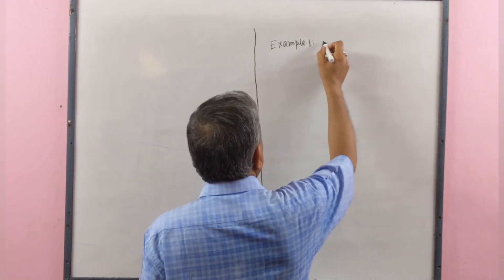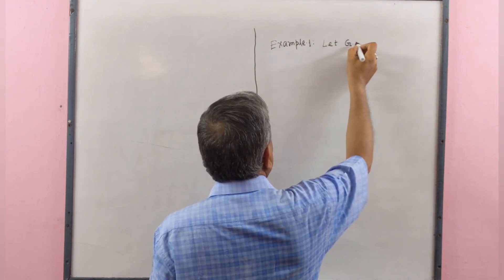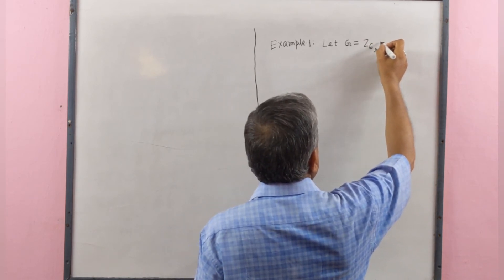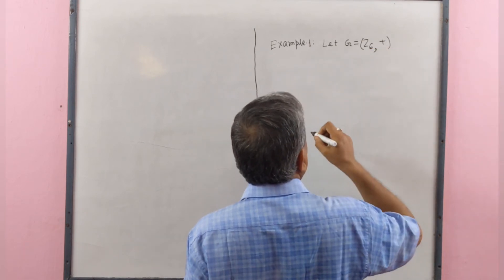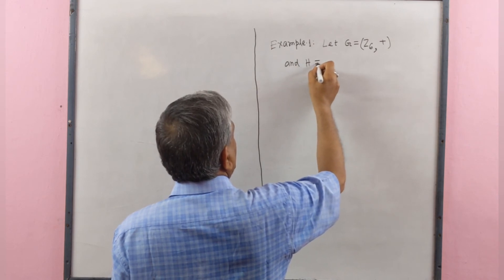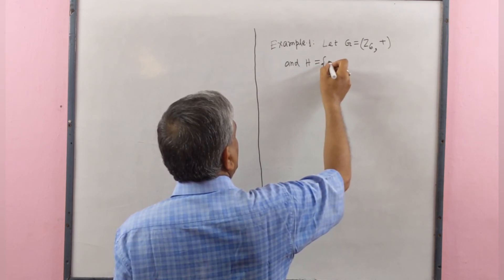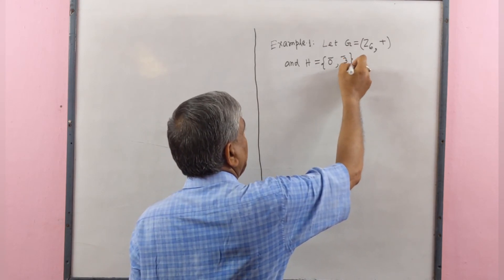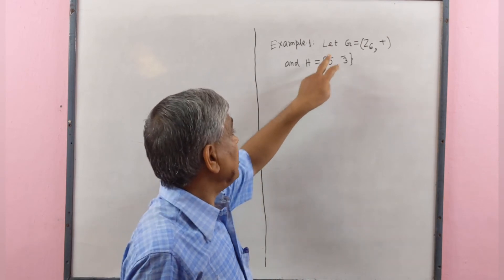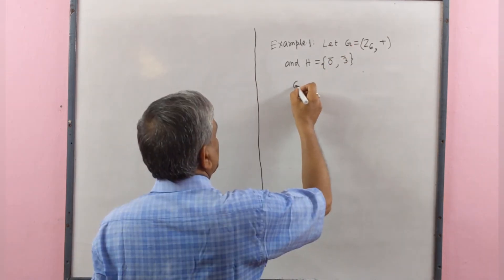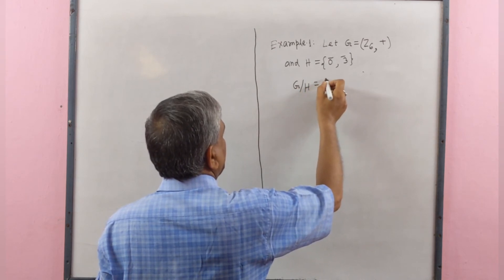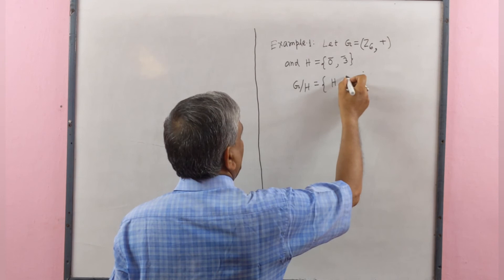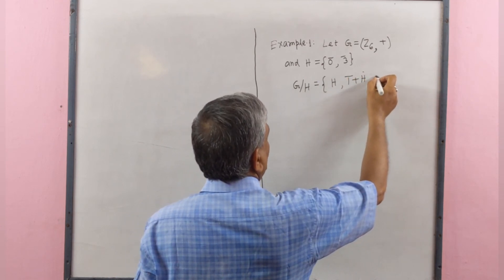Now we give some examples. Example 1: Let G equal to Z₆, the residual class modulo 6 with binary operation addition, and H equal to the set containing 0-bar and 3-bar. This is a normal subgroup of G. The quotient group G by H contains elements H, 1-bar plus H, and 2-bar plus H.